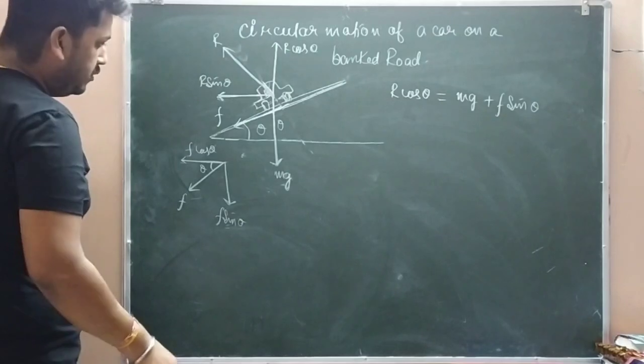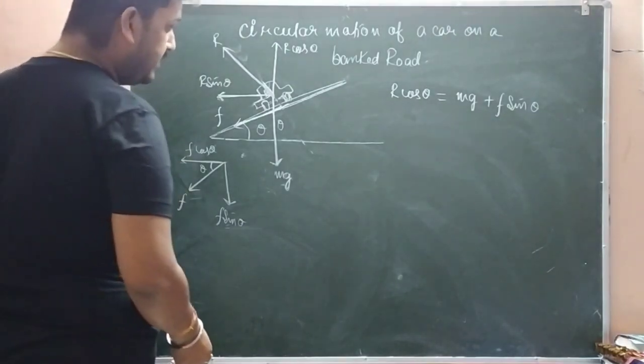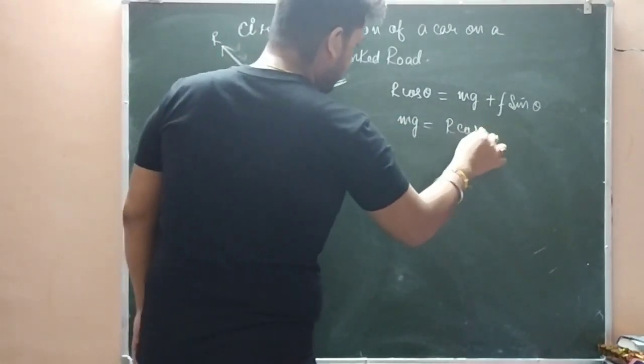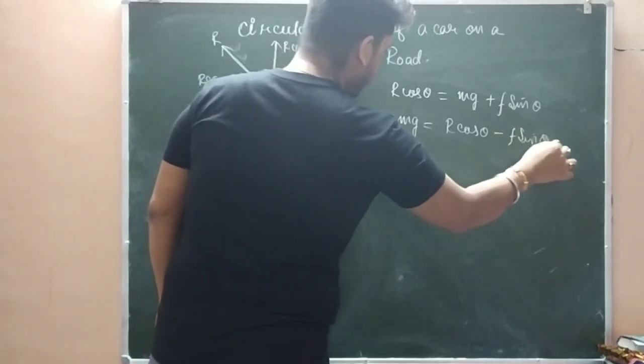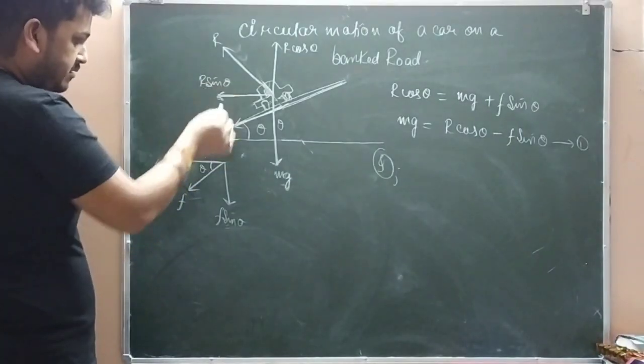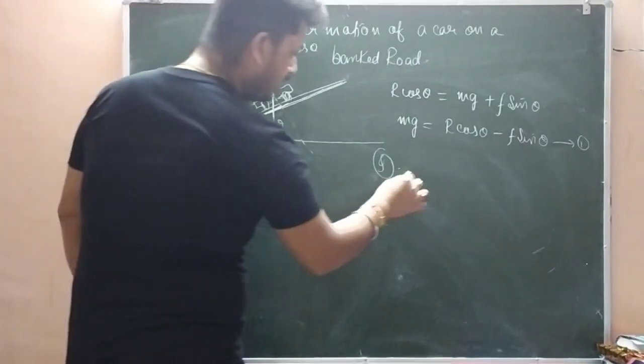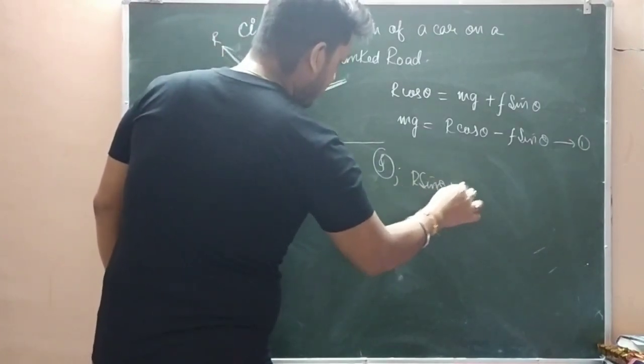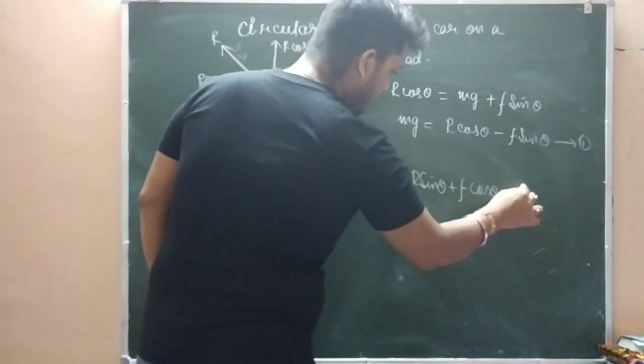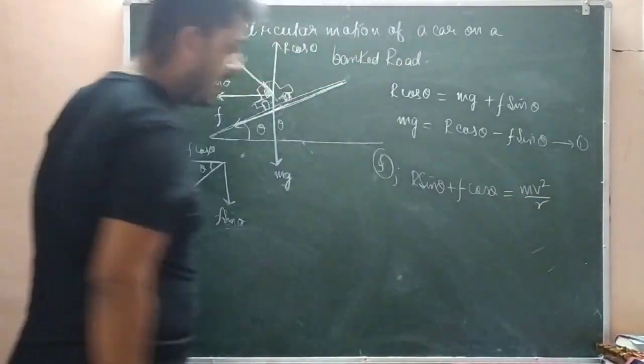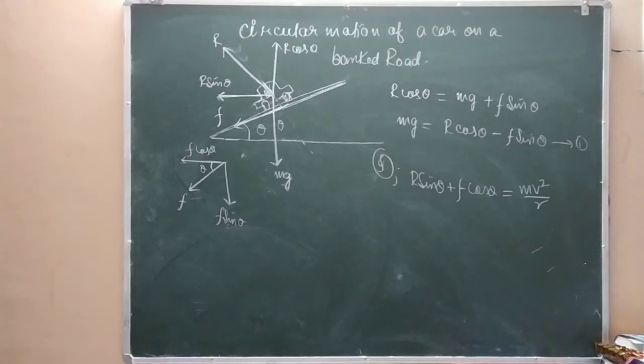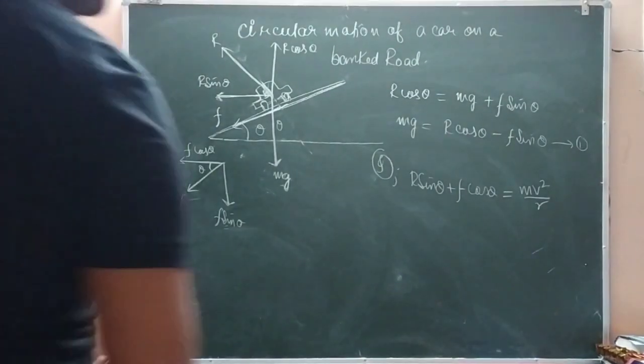And second, that is necessary centripetal force. This is equal to mv²/r. The second thing is that R sin theta and F cos theta is providing the necessary centripetal force. So R sin theta plus F cos theta equals mv²/r, where r is the radius of the circular path. This is equation number 2.